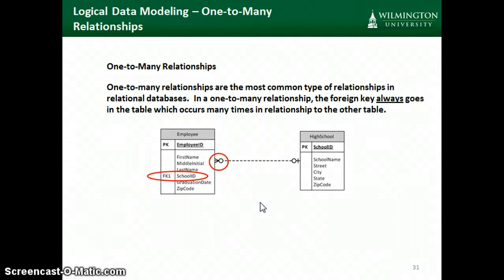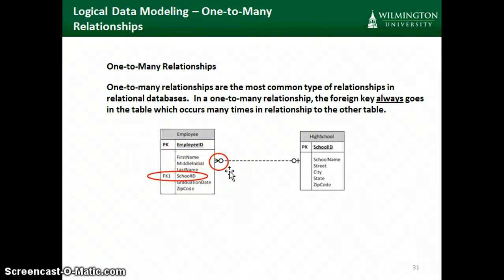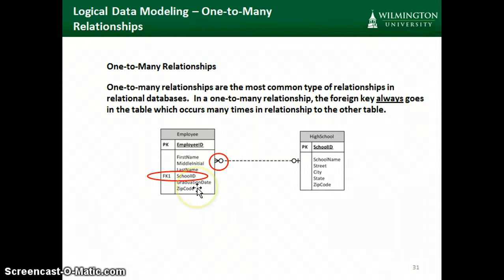One-to-many relationships are one of the most common we'll find. If you want to double-check that you've set up your relationships properly, Visio will automatically put the foreign key on the side of the relationship that you've specified occurs many times in relation to the other entity. You can work through the logic we talked about earlier to see if the foreign key has been placed correctly. If not, you'll have to change your relationship line.